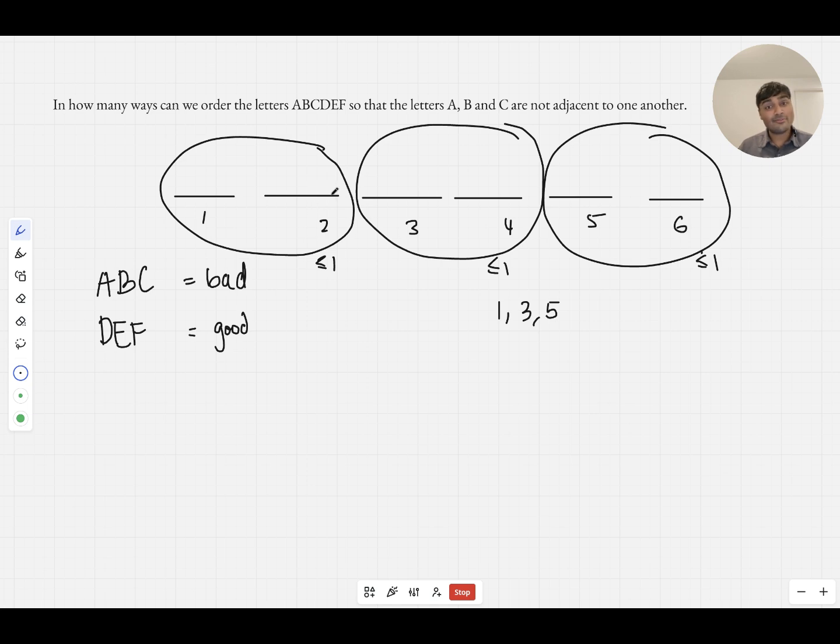And so that actually only gives me two to the power of three different possibilities to check of triples, because I have two choices for my low number, one or two, two choices for my middle number, three or four, and two choices for my large number, five or six, as to where these bad letters go.